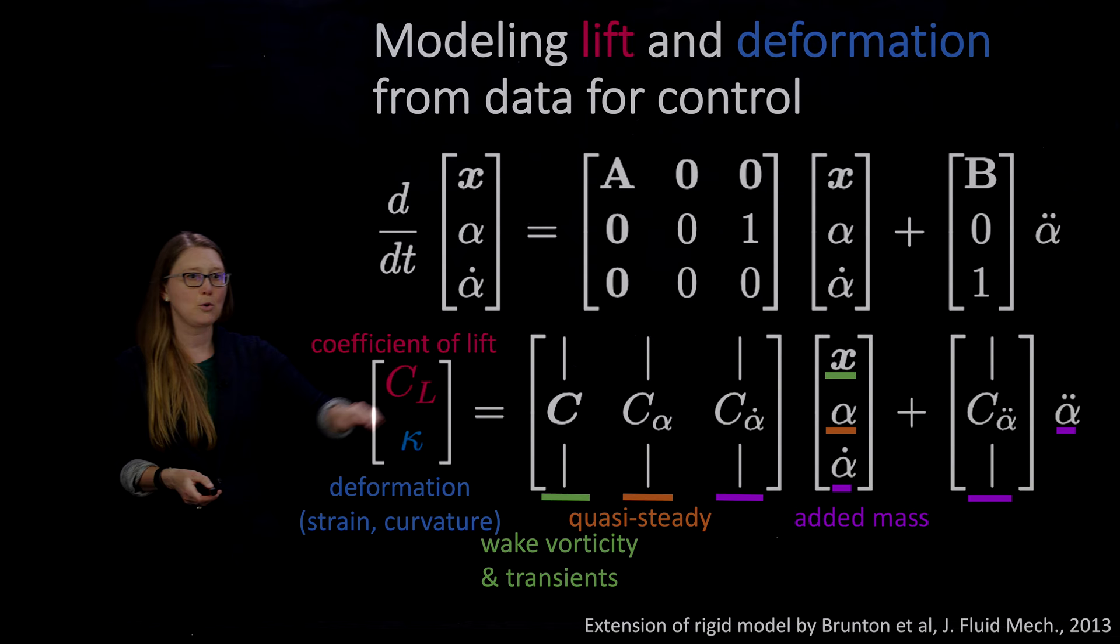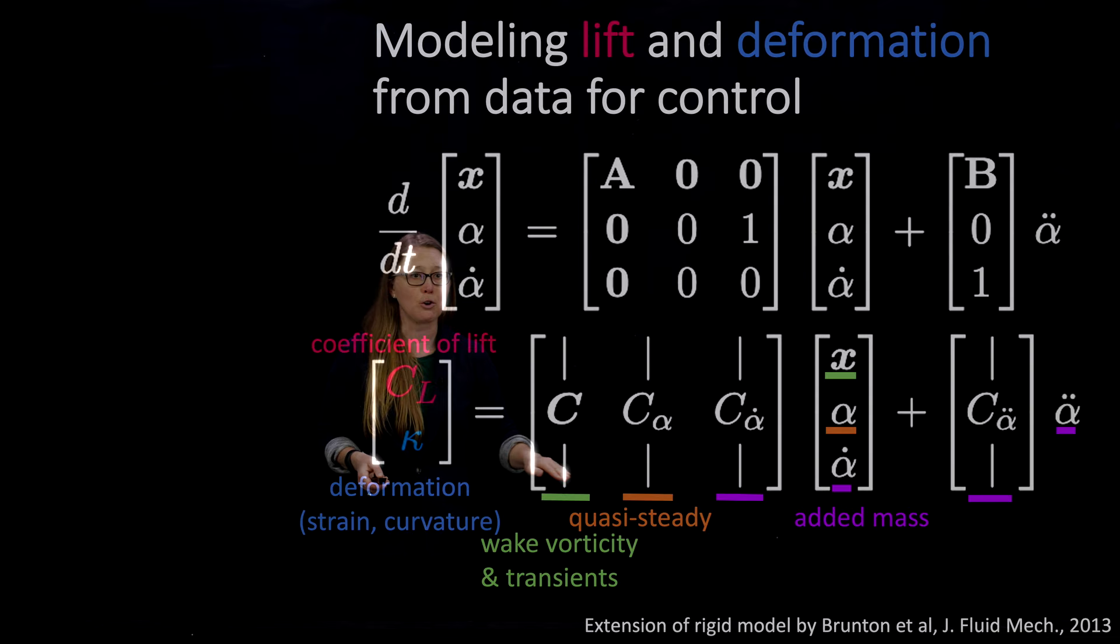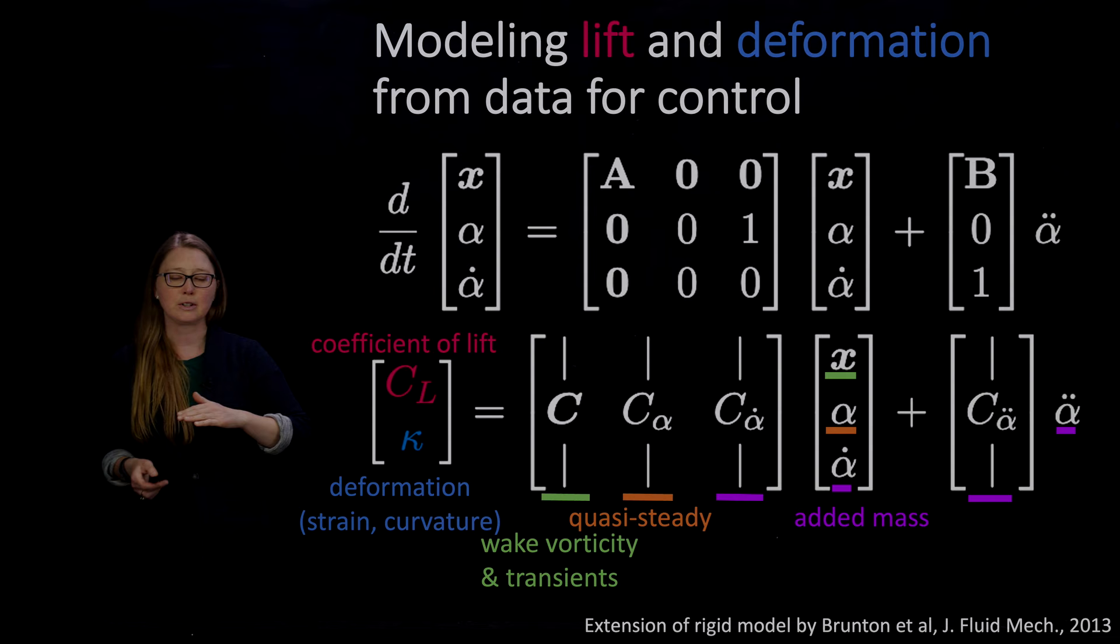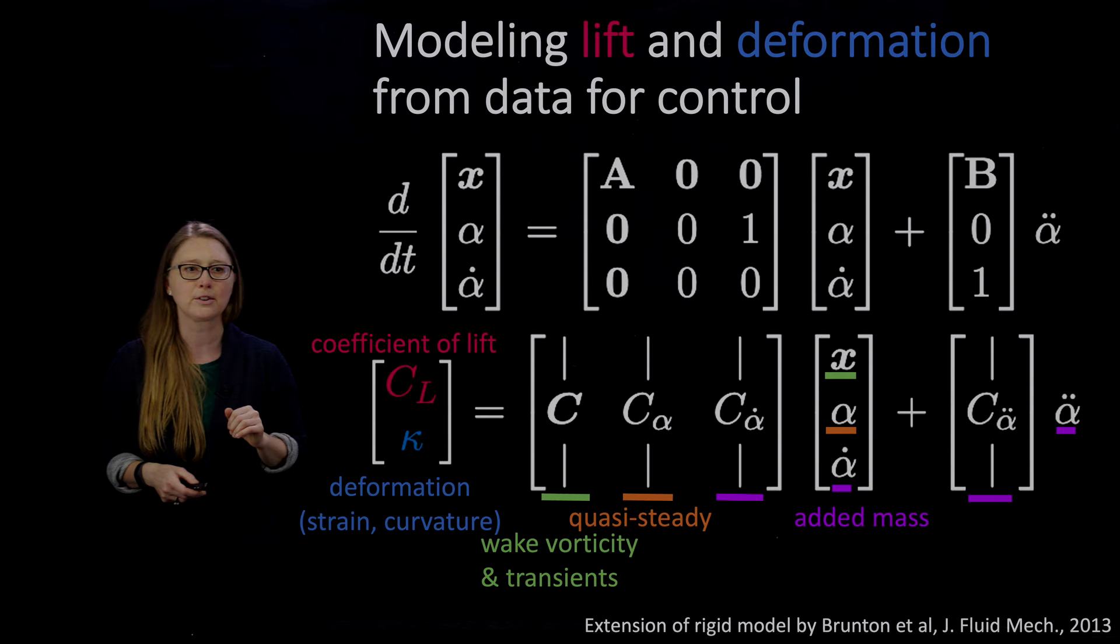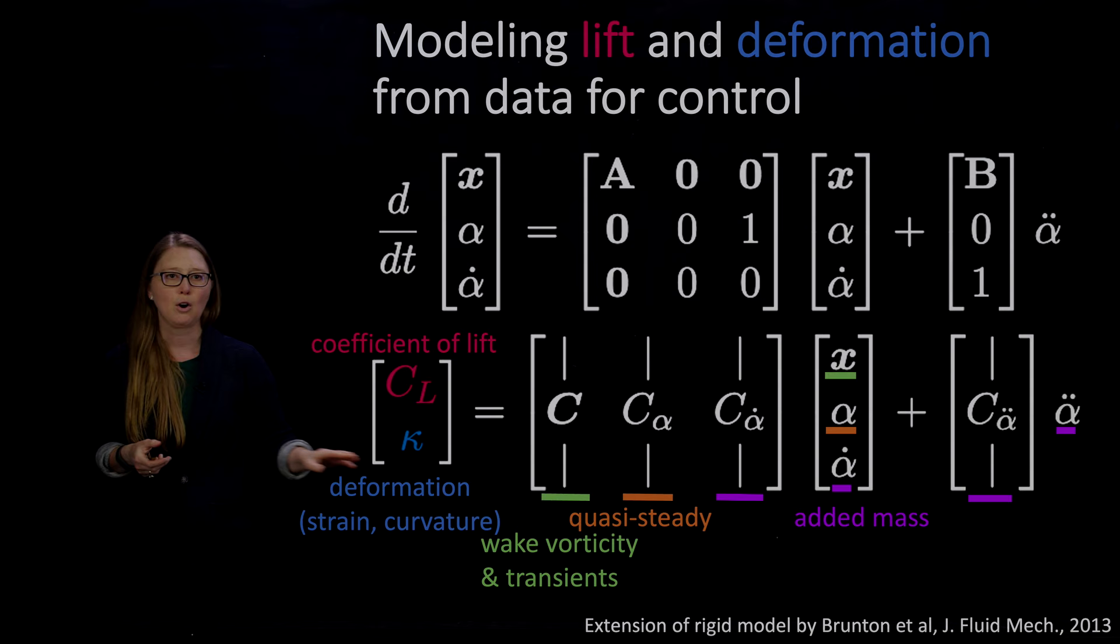And this whole matrix has two rows, so you're going to get coefficients associated with the coefficient of lift. And then you're also going to get these coefficients associated with your measure of deformation. So you can see how much each term contributes to each. Our Theodorsen's transfer function is still brought in here. It's no longer explicitly a bunch of Bessel functions. That's your wake vorticity. And now it's also going to be your bending transients because we're also modeling deformation, not just coefficient of lift. So that's our C matrix there.